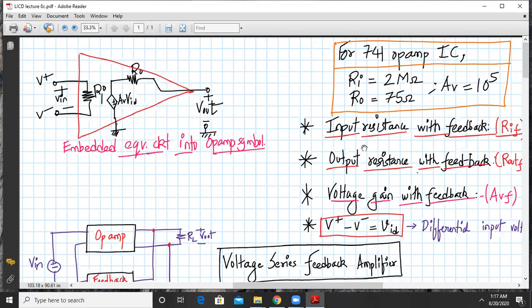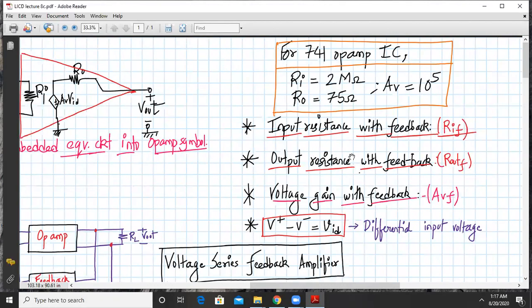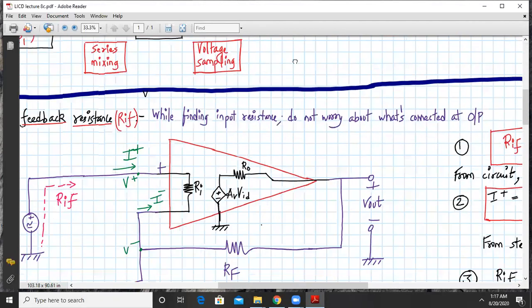Today's lecture focuses on deriving the expression of input resistance with feedback, that is RIF. One more thing to note here is V plus minus V minus is called VID, which is the differential input voltage.